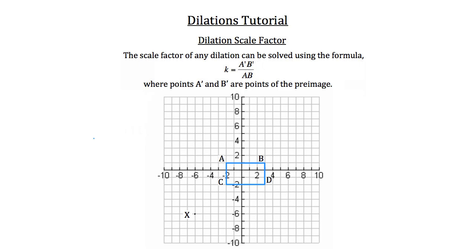When we dilate a figure in geometry, we're either expanding or contracting it. So rectangle ABCD will either enlarge or get smaller. To perform the dilation, we draw lines directly from point X through each of the vertices A, B, C, and D.